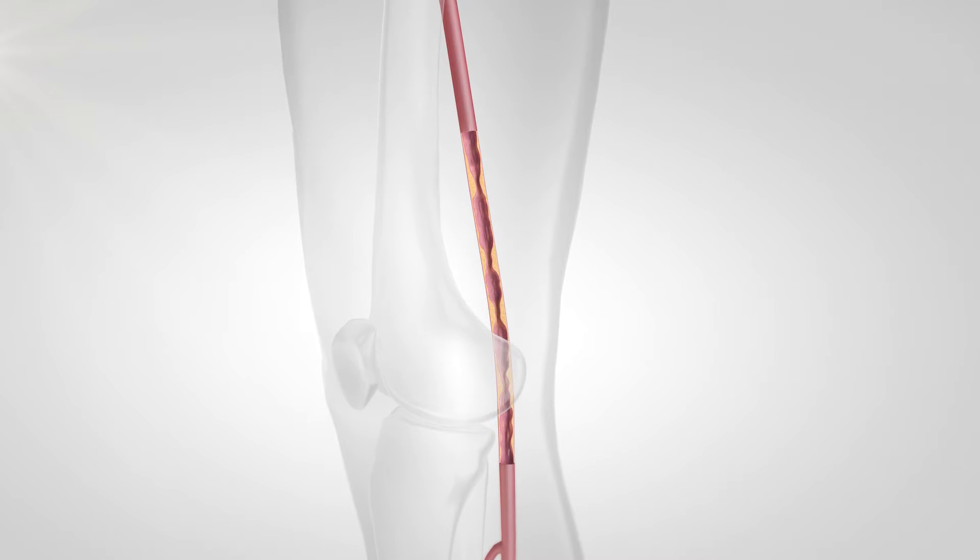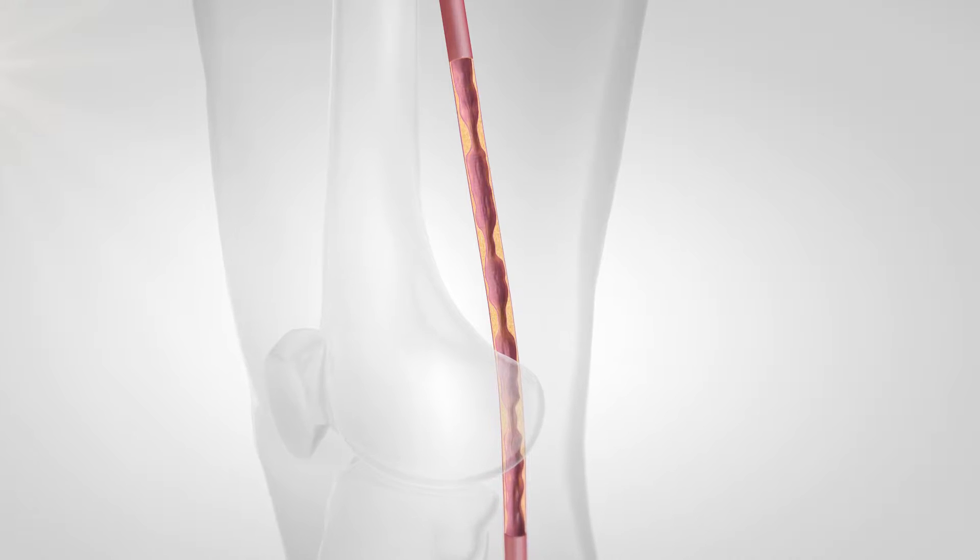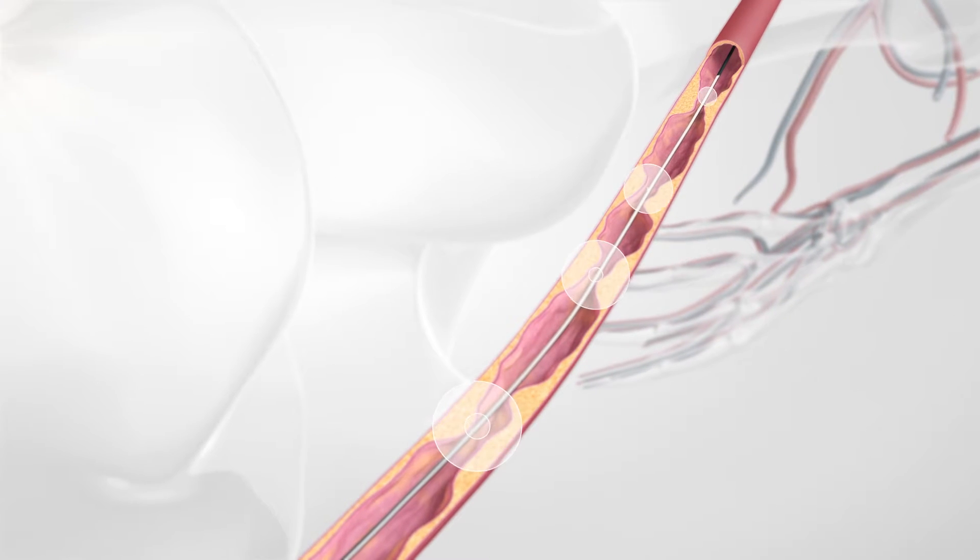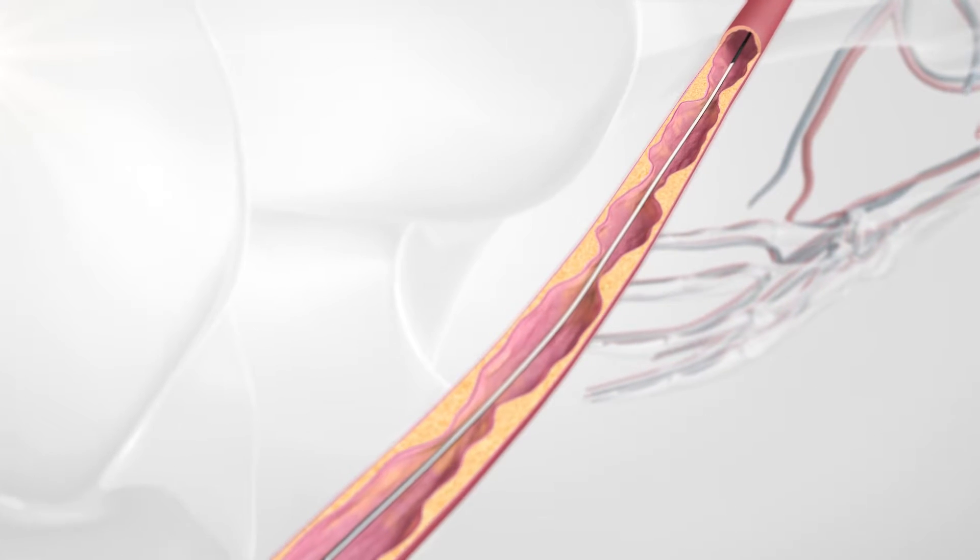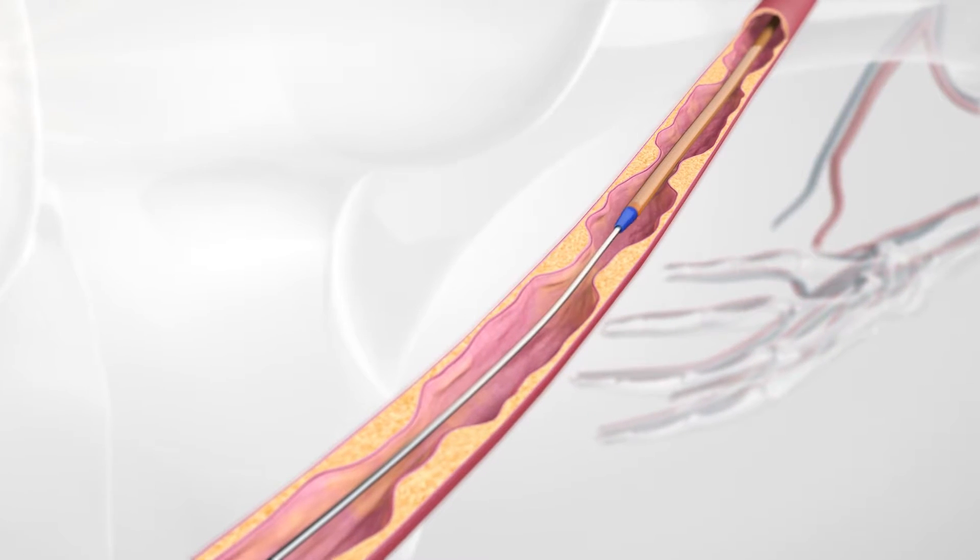In this example, four highly calcified lesions are in a 13cm long segment. After pre-dilatation with a balloon catheter, the first short stent can be implanted.